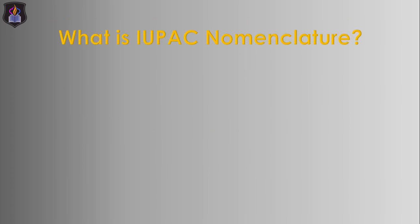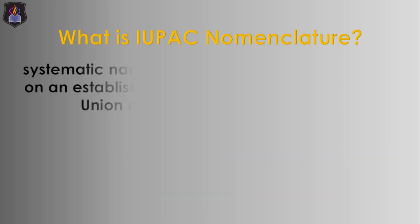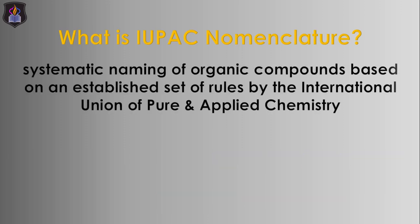The next question is: what is IUPAC nomenclature? IUPAC is an acronym for the International Union of Pure and Applied Chemistry, while nomenclature means naming. Therefore, IUPAC nomenclature is the systematic naming of organic compounds based on certain rules established by the International Union of Pure and Applied Chemistry.